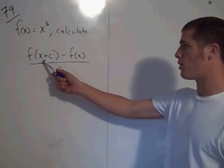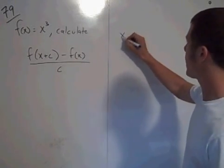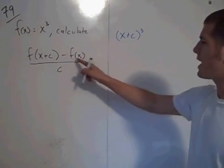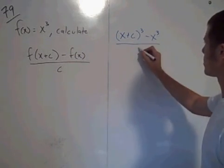So to start, plug in x plus c for x in f of x. You have x plus c cubed minus f of x, so minus x cubed. This is all over c.